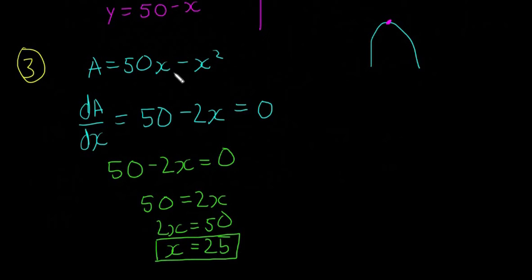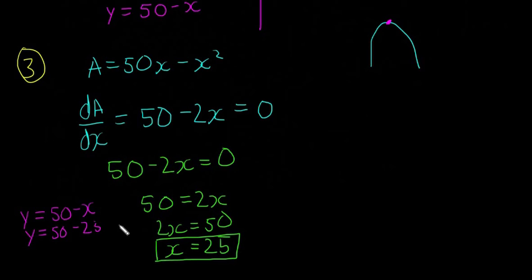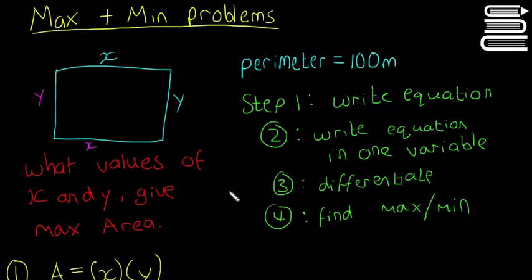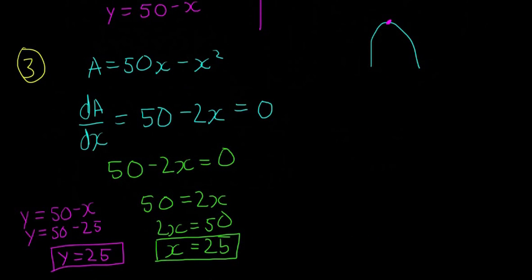We also want to find y. Since y equals 50 minus x and x equals 25, we get y equals 50 minus 25, so y equals 25. If both x and y equal 25, the shape that gives the maximum area is a perfect square — because both sides are equal. So x equals 25 and y equals 25 is our answer.